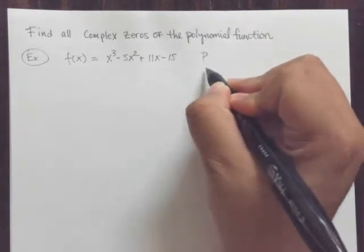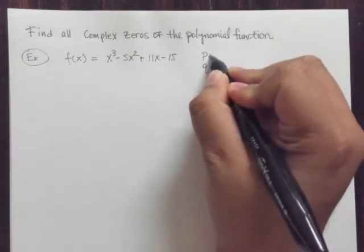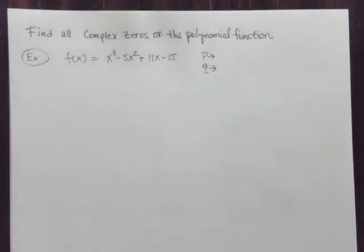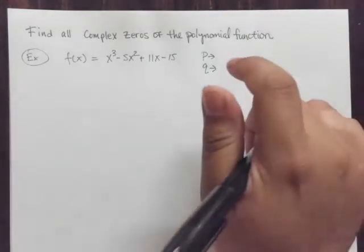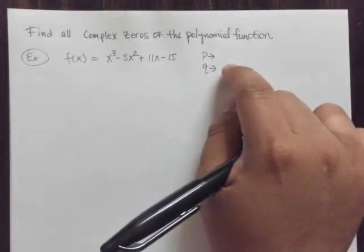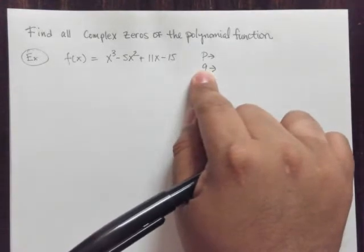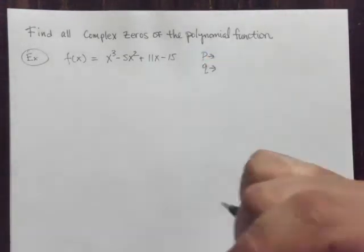Let's find out what our p and our q is. Now, in one of the earlier videos, we talked about the rational zeros theorem, and that's where this comes from. So if you haven't seen it, you might watch that video.